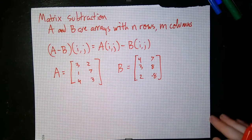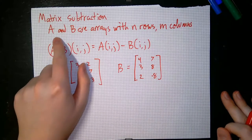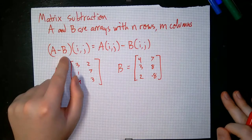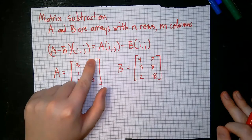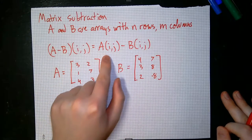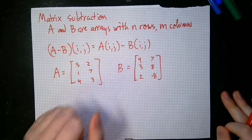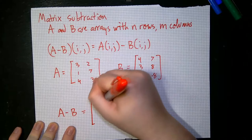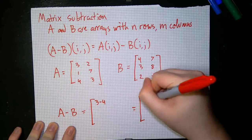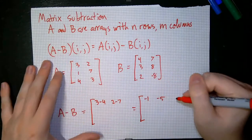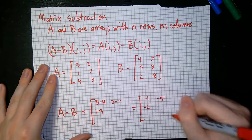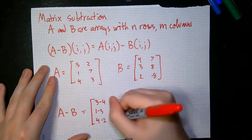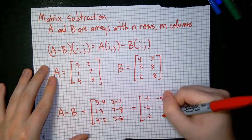The next operation is matrix subtraction, which works very similarly to matrix addition. A and B are arrays with n rows and m columns — same number of rows and columns. The i-th row, j-th column entry of A minus B is A's i-j-th entry minus B's i-j-th entry. For our example: 3 minus 4 is negative 1, 2 minus 7 is negative 5, 1 minus 3 is negative 2, 7 minus 8 is negative 1, 4 minus 2 is 2, and 3 minus negative 8 is 11.